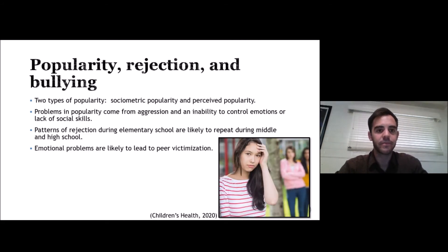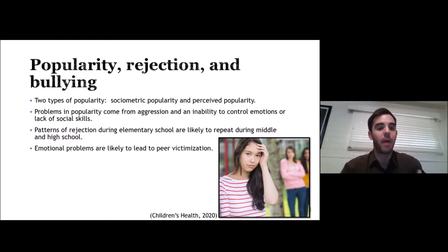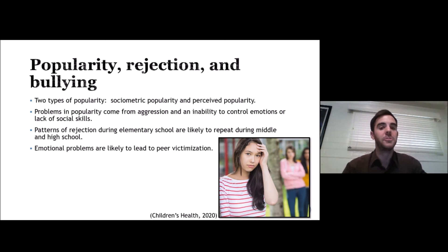When it comes to popularity, rejection, and bullying, there are two types of popularity: sociometric popularity and perceived popularity. Sociometric popularity refers to how much people are genuinely liked. Perceived popularity belongs to adolescents who use money, wealth, and influence to be popular. Those who are more emotionally stable are more likely to be popular, while those who are more emotionally compromised are less likely to be popular and more likely to be victimized and bullied.